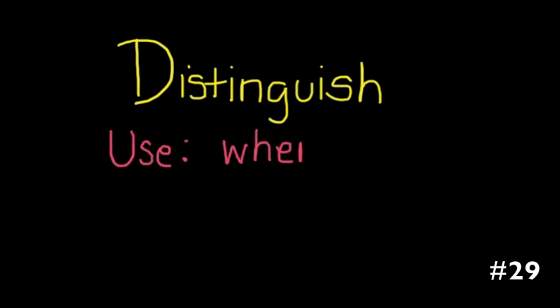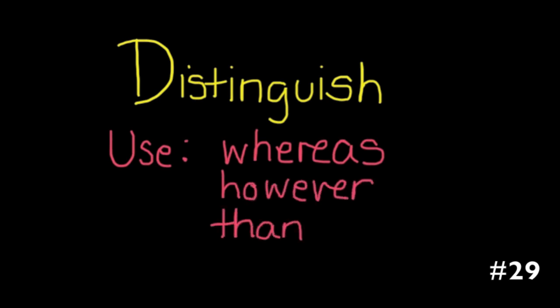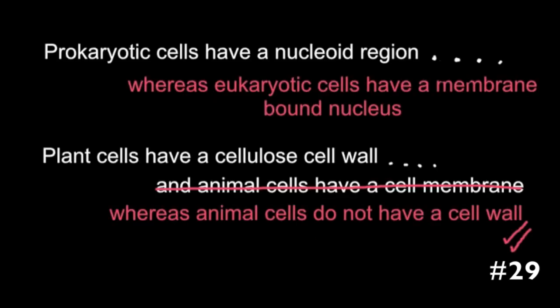You could be asked to compare or you could be asked to distinguish. These are two of the IB command words. If you are asked to distinguish, the IB examiners report specifically saying that students should use the terms whereas, than, or however in their sentences. As in the previous example, prokaryotic cells have a nucleoid region, whereas eukaryotic cells have a membrane bound nucleus.